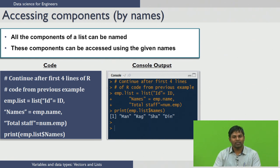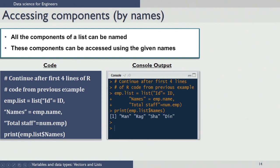For example, using the same list, you can assign names such as 'id', 'names of employees', and 'total staff' to the attributes. Once you execute this code, a named list is created. To access a component by name, you use the dollar operator: m.list$names retrieves the component named 'names', and when printed, it displays the employee names.